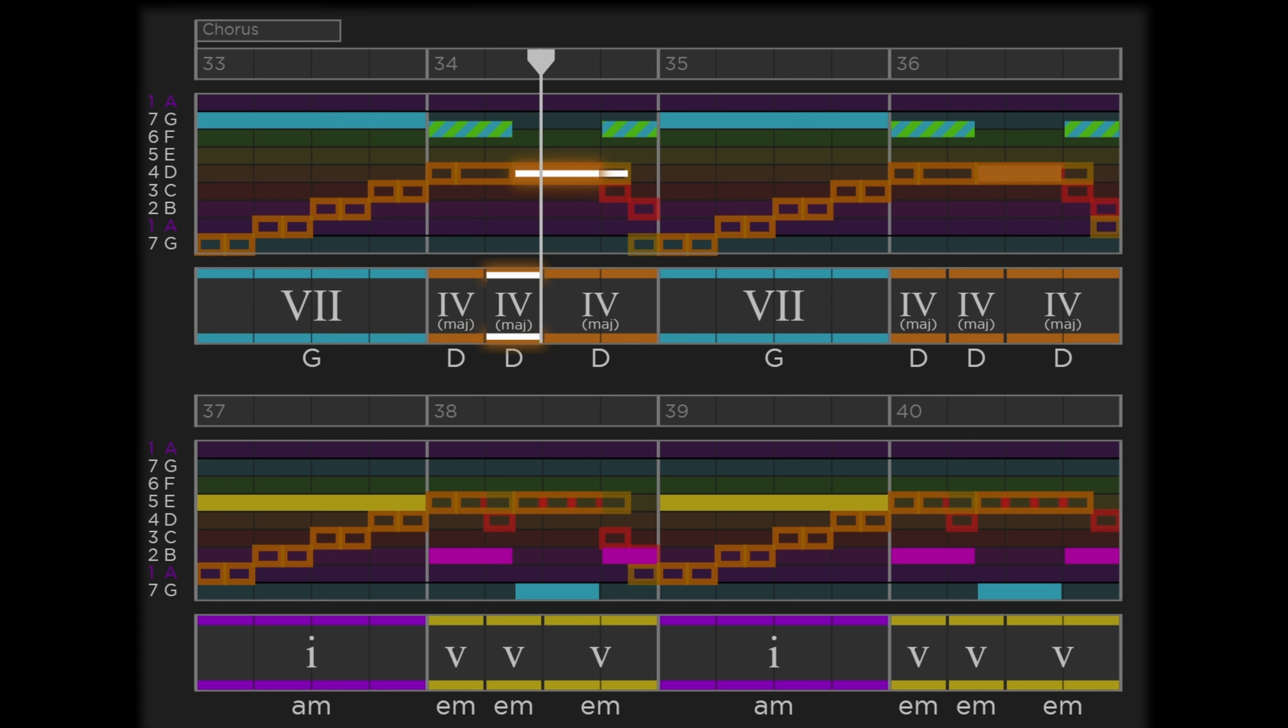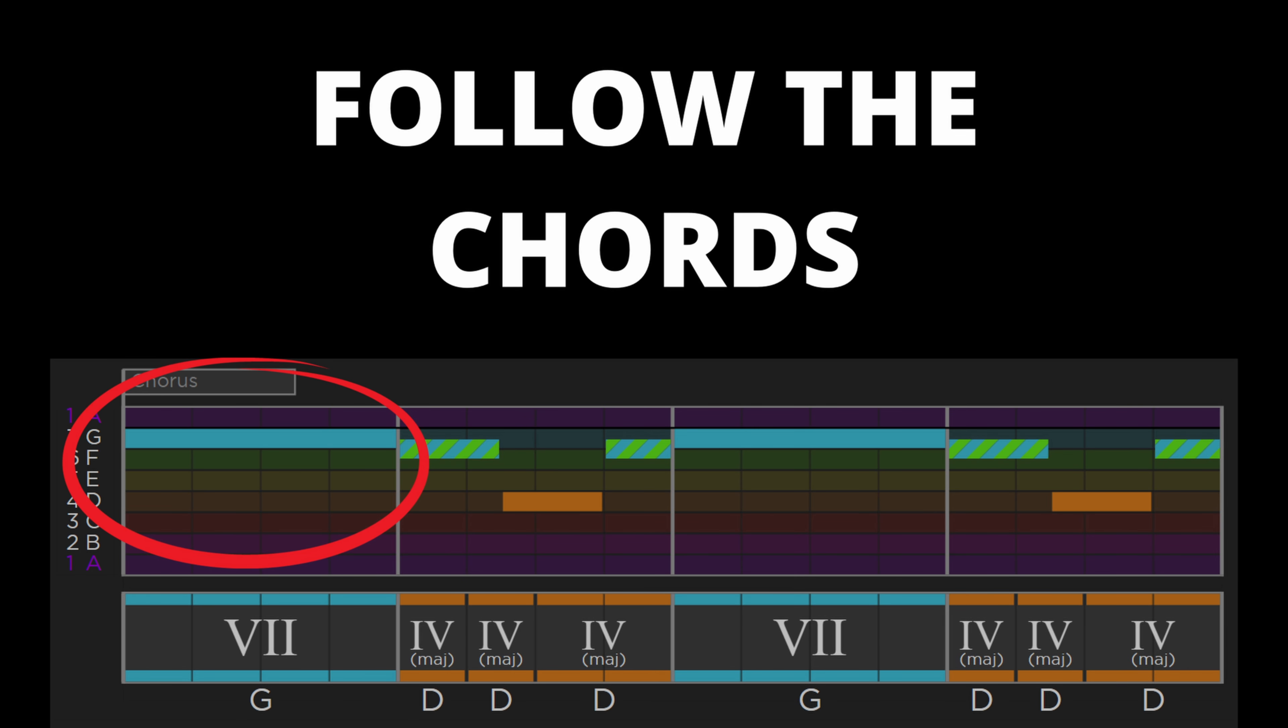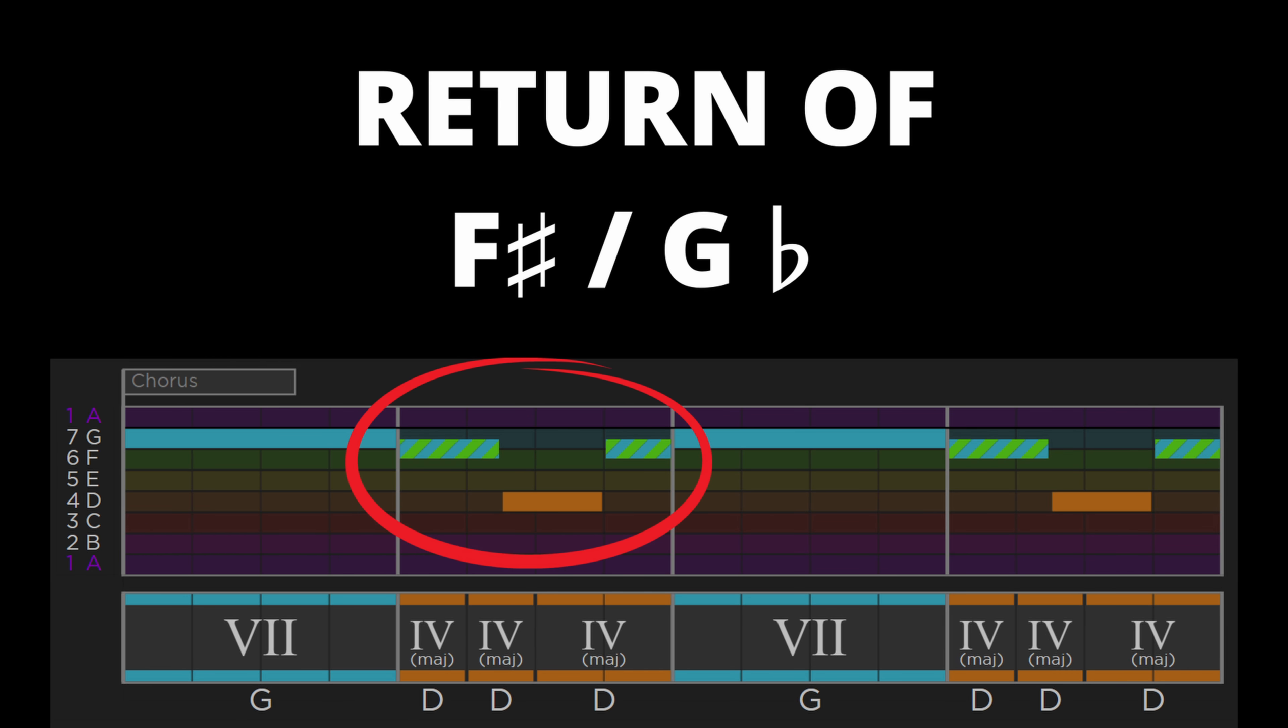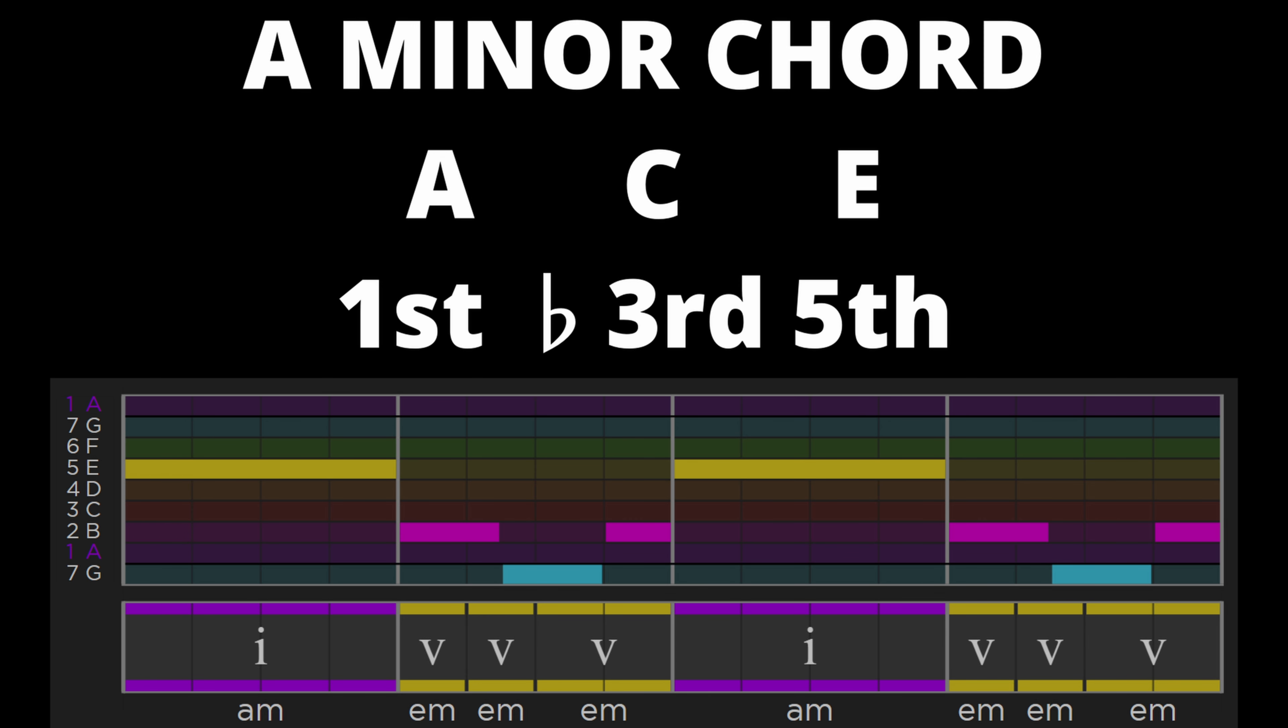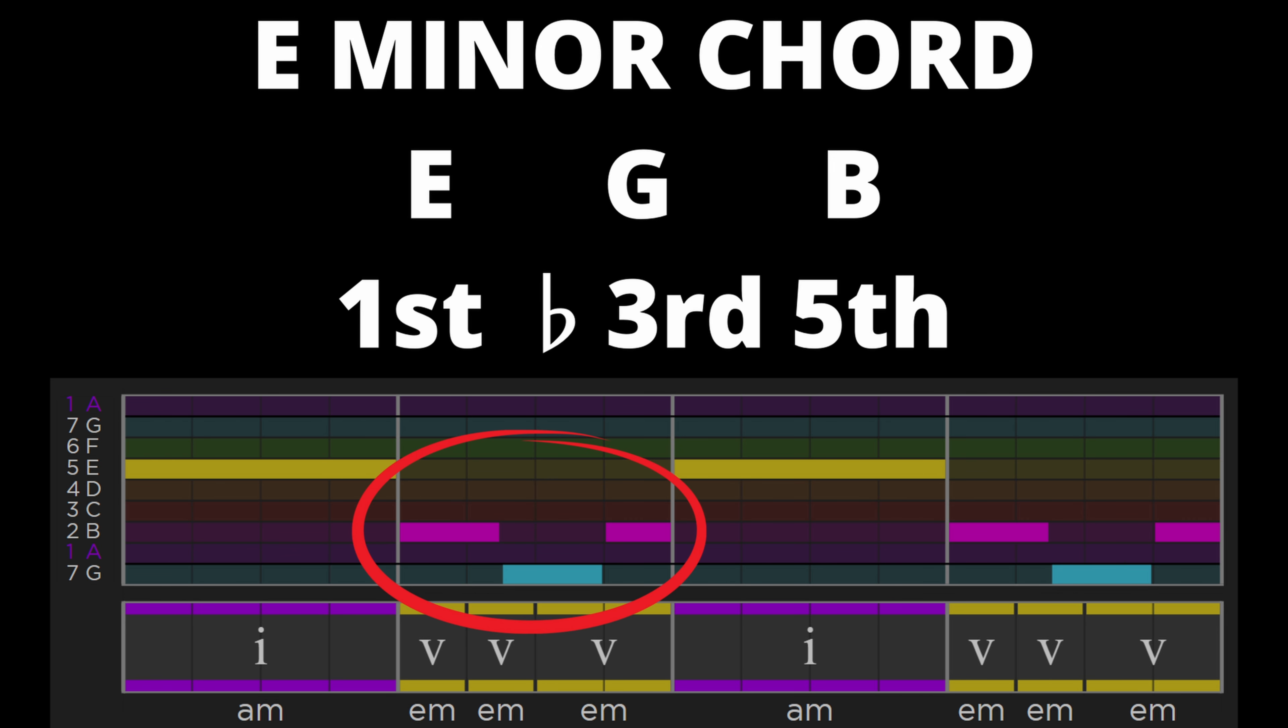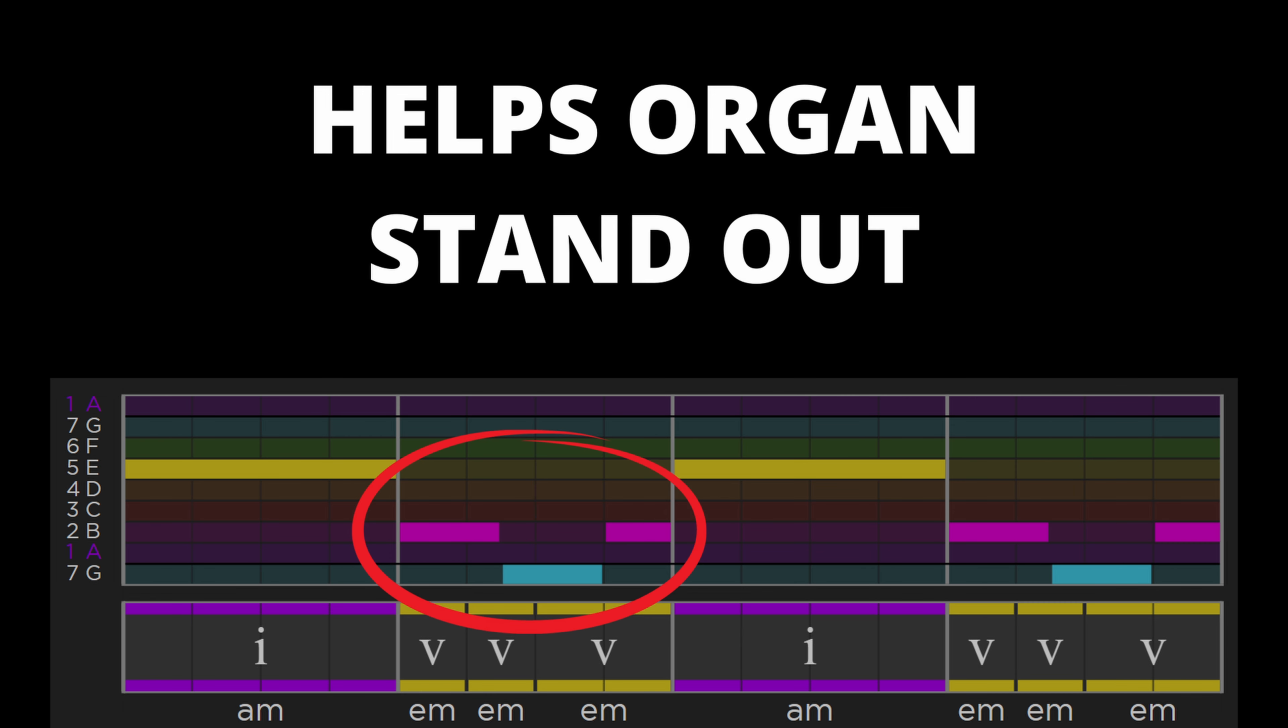The final piece of the chorus puzzle is the organ. The organ holds a note for a bar then plays two dotted quarter notes before a quarter note. It follows along with the underlying chords starting with a G note. Then as the chords change to the major four D major we have the return of our old friend the F sharp slash G flat note. This steps down from the G note and then alternates with the D note to provide a cool interesting background sound. Over the A minor chord the organ plays an E note which is the fifth. Over E minor the notes B and G are heard - the minor third and fifth notes from the underlying chord.